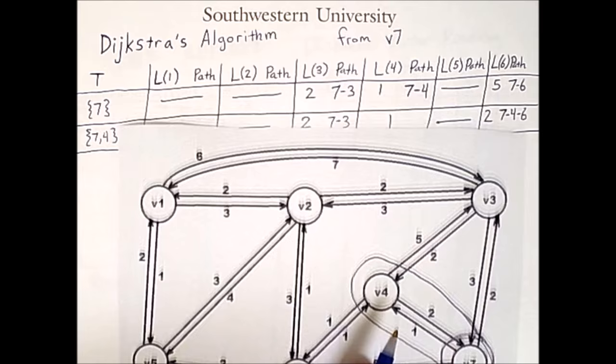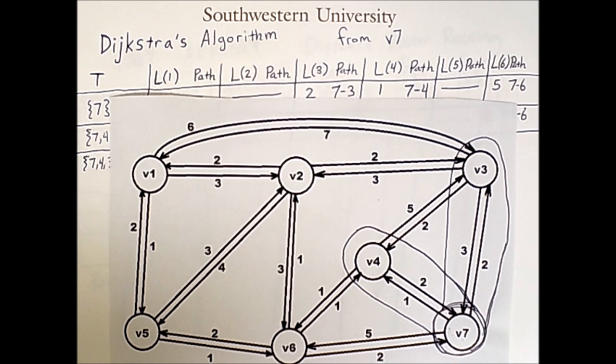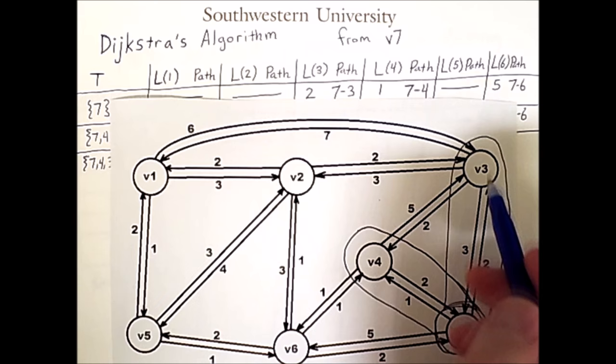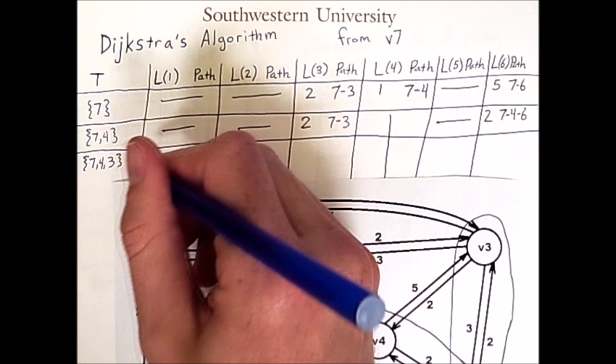And note that the path we're taking to reach 3 is the following. So we are now going to consider which nodes vertex 3 gives us access to that we did not have before. For example, we can now reach vertex 1 within one hop of vertex 3. So we can add a path here where the cost is 7 plus 2 for a total of 9, and the path is 7, 3, 1.